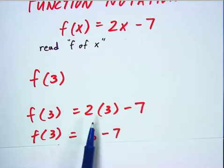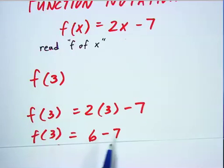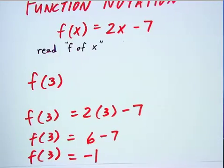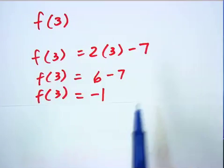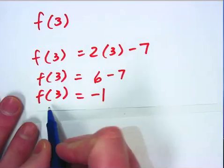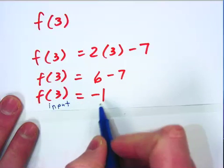Then working out by orders of operations, 2 times 3 is 6 and 6 minus 7 in this particular case would be negative 1. Therefore the conclusion would be that an input of 3 gives us an output of negative 1.